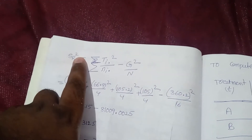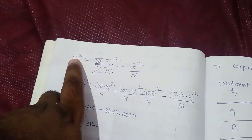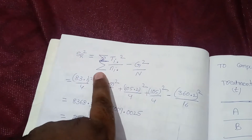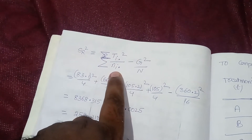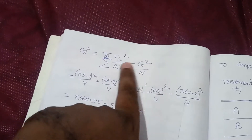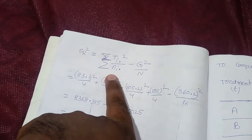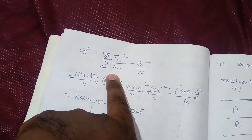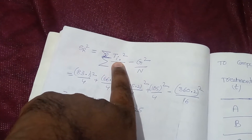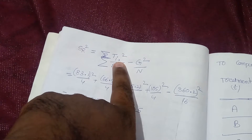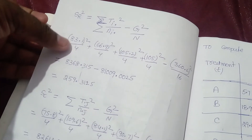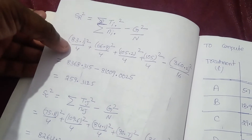Next, we calculate the row sum of squares SR². The formula is: summation of (T_i·)² / n_i· minus G²/N. The G²/N value is already calculated as 8109.0025. Here T_i· means the row total with i fixed and j varying. For the first row total, we have 83.1² / 4.